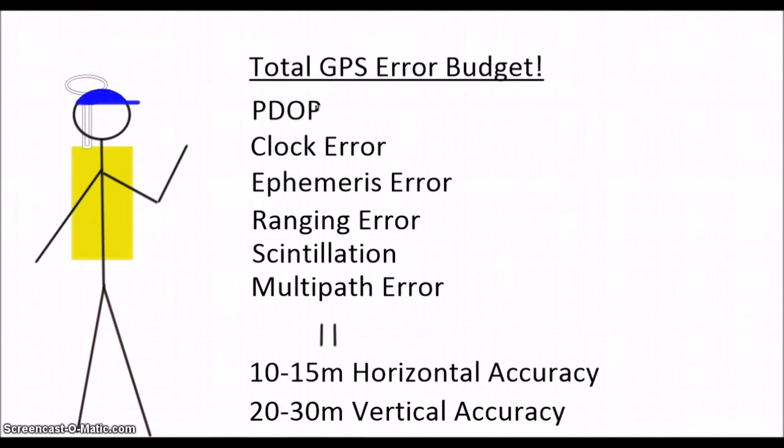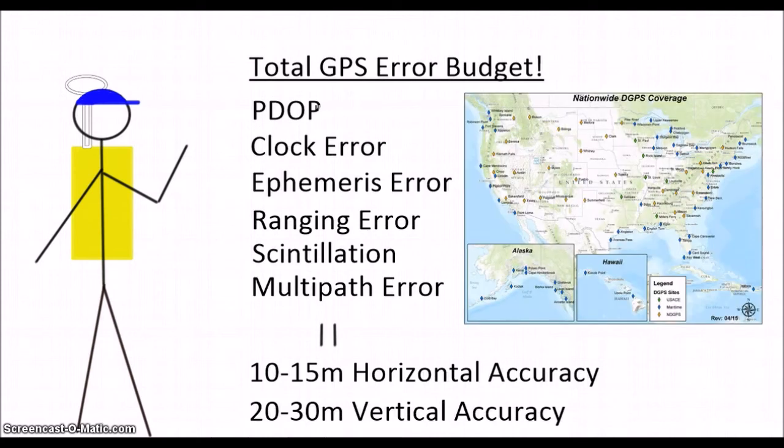Clearly we need a solution that is accurate to more than 30 meters in the vertical, especially if we are to survey to the ellipsoid. There are a number of technologies currently in place to provide an even more accurate solution, such as the U.S. Coast Guard-owned DGPS service and the NOAA-owned CORS network, or Continuously Operating Reference Station.